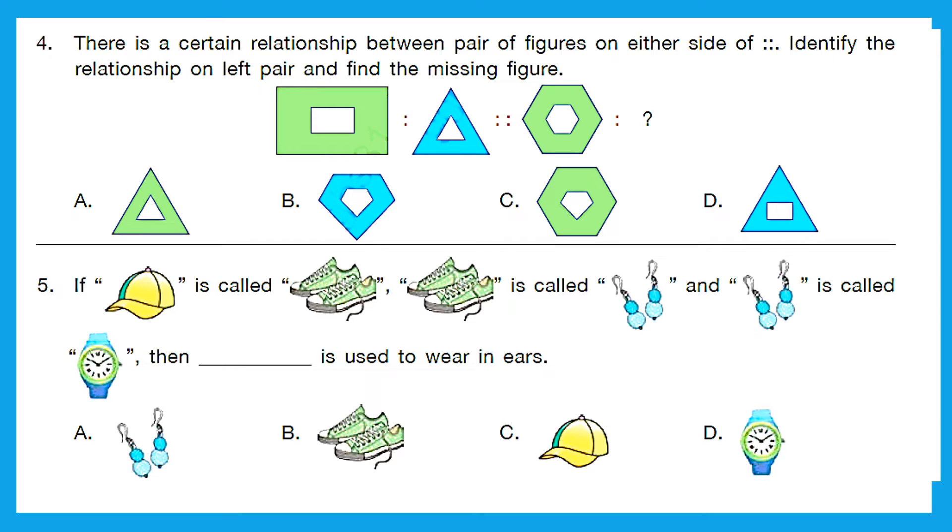Question 4. There is a certain relationship between pair of figures on either side of analogy. Identify the relationship on left pair and find the missing figure. Let's see the relationship between the first pair. So here what I can see is the number of straight lines in both inner and outer shape in the second figure is one less than the first figure. So first one is a rectangle. There are four sides and then its pair is triangle that is three sides. So we'll put the same relation over here and according to that relation, that is a hexagon and 6 minus 1 is 5. So we have to find pentagon and the right figure here should be option B.